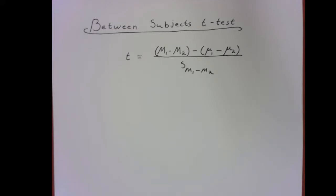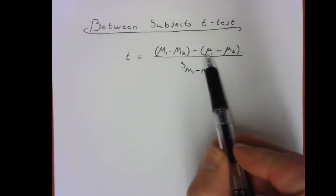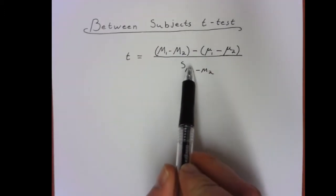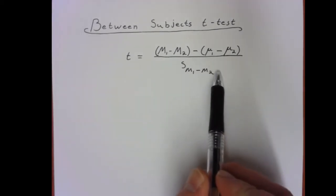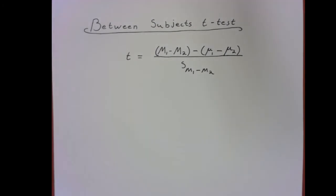So the actual formula for this t-test isn't really that different from other t-tests we've covered. We have a mean difference in the numerator and we have a standard error in the denominator. But now because we're looking at two different samples and we know nothing for sure about the populations they come from, it adds extra layers of complexity.